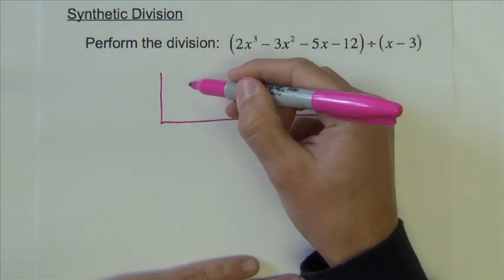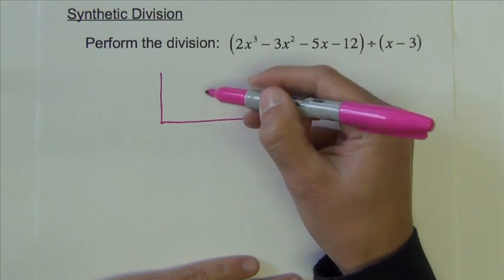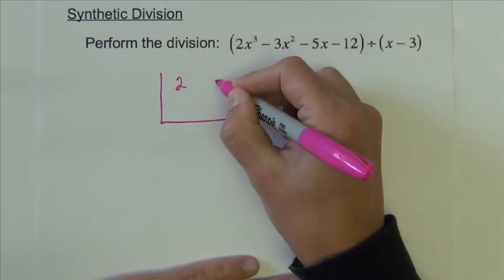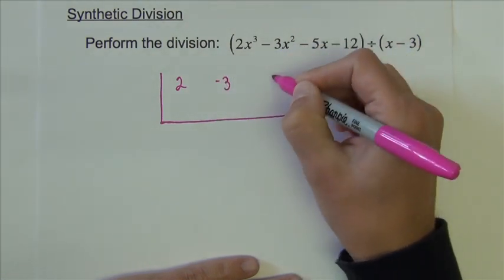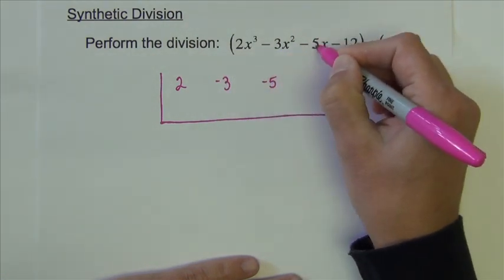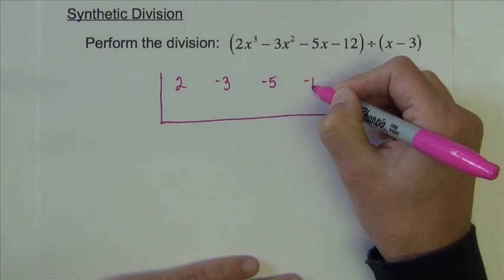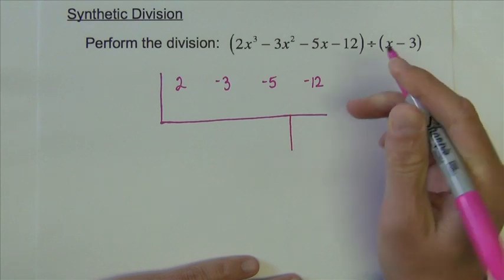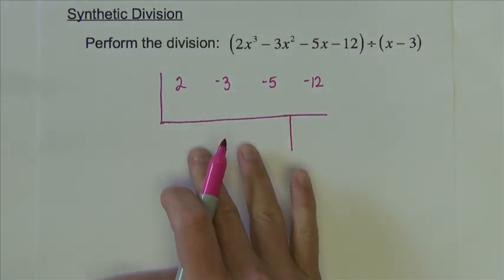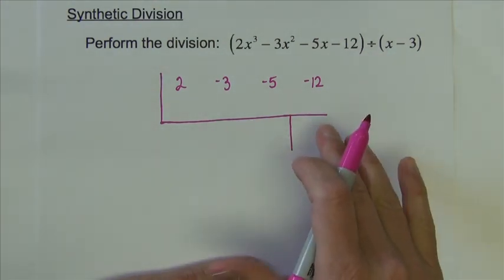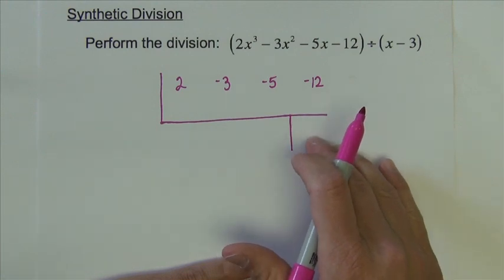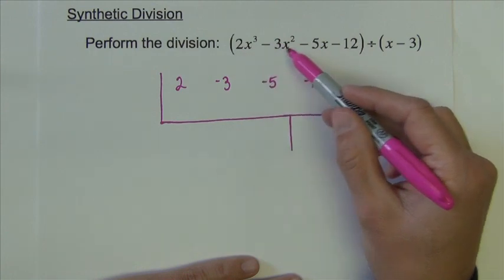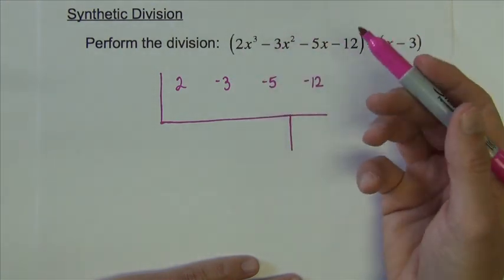But I've made it a little bit wider. Notice it's going to be wide enough to fit two rows of numbers here. On the inside go my coefficients, 2 for x to the third, negative 3 for x squared, negative 5 for x, and negative 12 for the constant. I'm going to put a little line here. I like to add this to separate what will be my quotient from my remainder. If there were any missing powers of x, just as in the long division example, I would put zeros in the appropriate spots, but there aren't here.